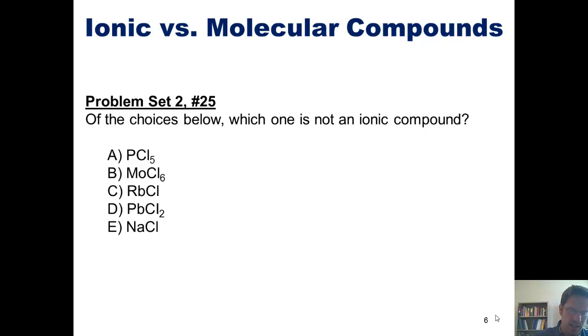So let's take a look at this problem. Of the choices below, which one is not an ionic compound? To answer this, we just have to look at each compound and ask ourselves, does this compound contain a metal bonded to a non-metal? If so, then it has an ionic bond and is an ionic compound. If not, then it has only covalent bonds and is hence a molecular compound. I'll let you tackle this one on your own.